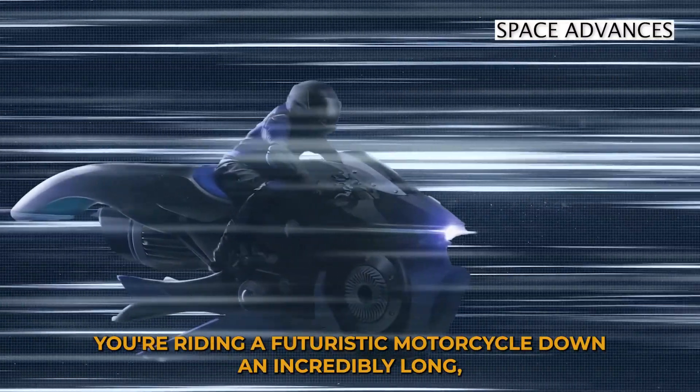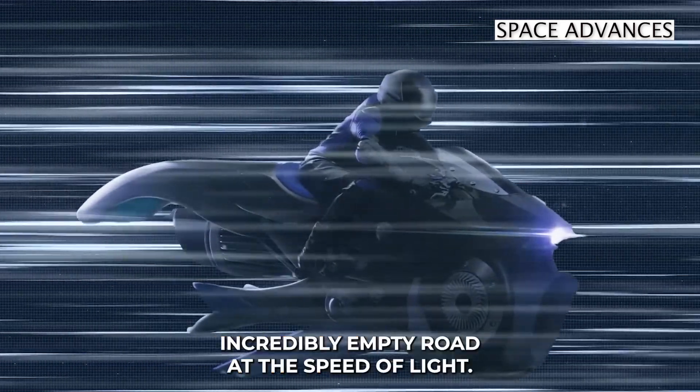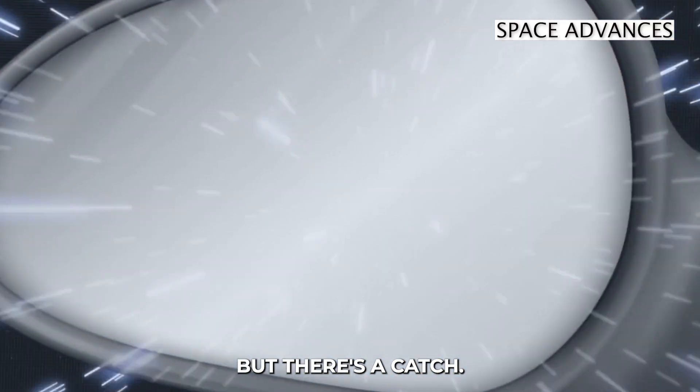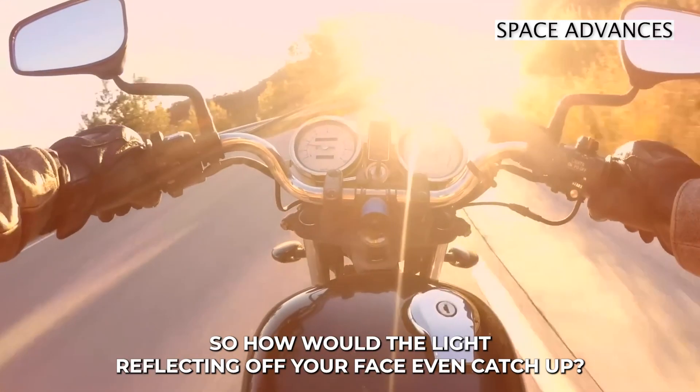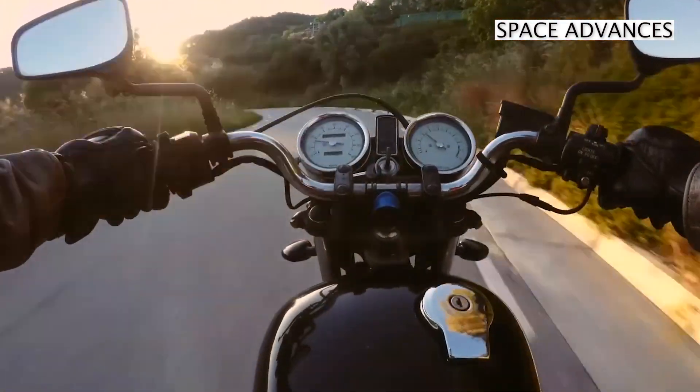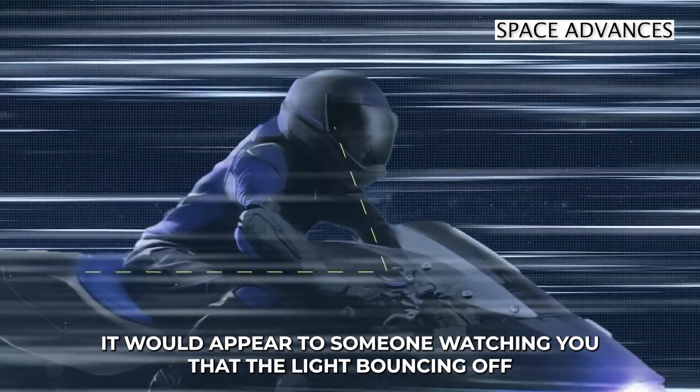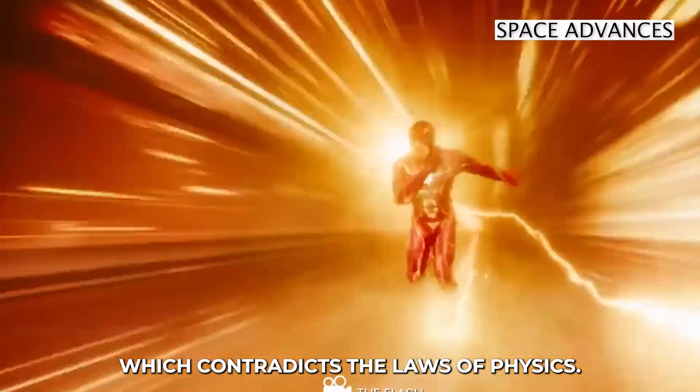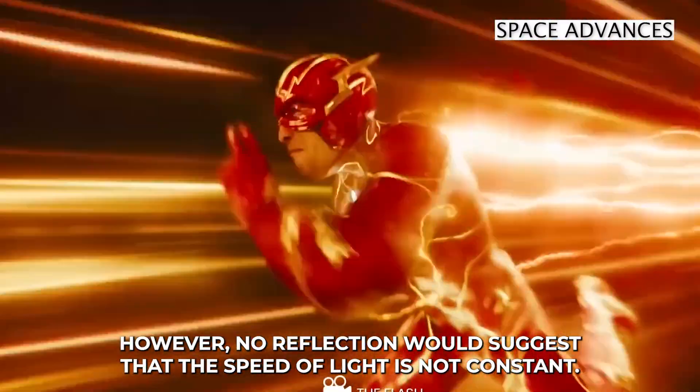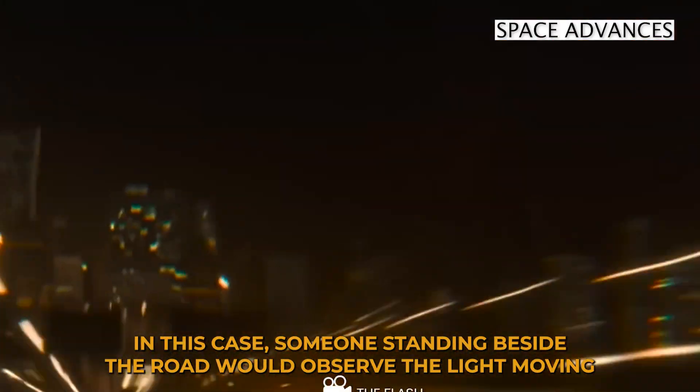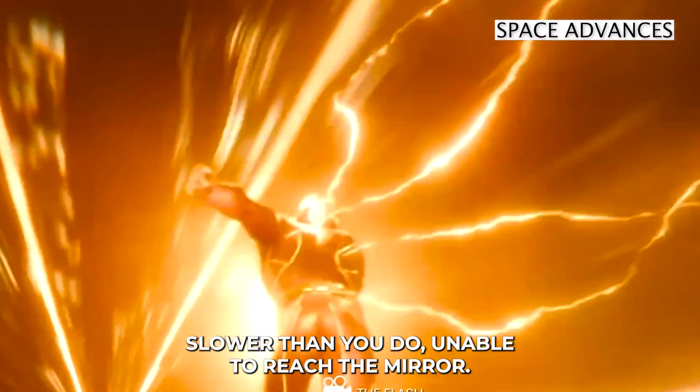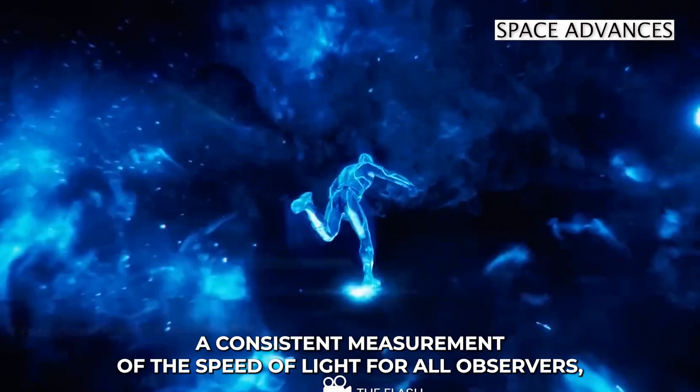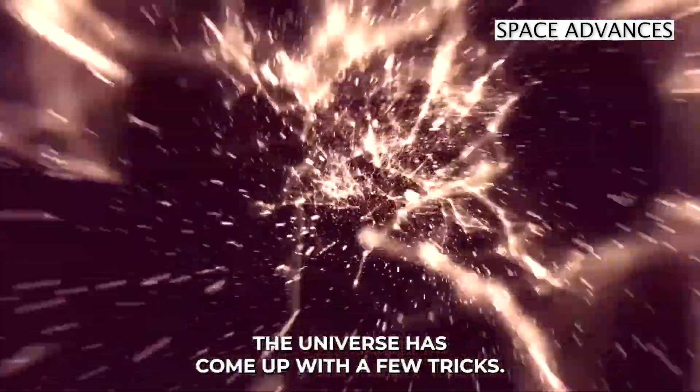Now picture this. You're riding a futuristic motorcycle down an incredibly long, incredibly empty road at the speed of light. You decide to look at your reflection in a side mirror. But there's a catch. The mirror is also moving at the speed of light. So how would the light reflecting off your face even catch up? If you can see your reflection, it would appear to someone watching you that the light bouncing off your face is moving faster than the speed of light, which contradicts the laws of physics. However, no reflection would suggest that the speed of light is not constant. In this case, someone standing beside the road would observe the light moving slower than you do, unable to reach the mirror. To avoid these glitches in the matrix and ensure a consistent measurement of the speed of light for all observers, the universe has come up with a few tricks.